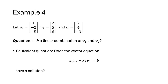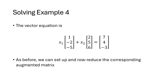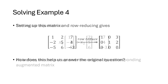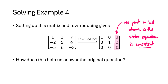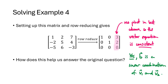Let's look at an example. Given vectors v1, v2, and a vector b, the question is: is b a linear combination of v1 and v2? The equivalent question is whether x1*v1 + x2*v2 = b is consistent. We set up and row reduce the corresponding augmented matrix. Looking at the reduced echelon form, there is no pivot in the last column, so the vector equation is consistent. Going back to answer the original question: yes, b is a linear combination of v1 and v2.